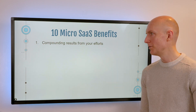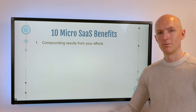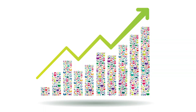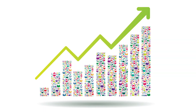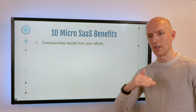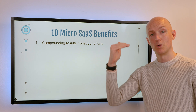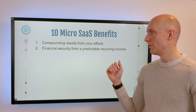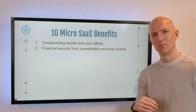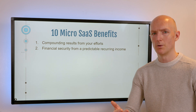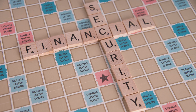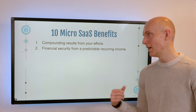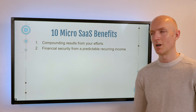Now let's get into some of the benefits. You don't start at zero every month — you start with the number of subscribers you had last month. There'll be a little bit of churn, but basically your results compound over time. As well as the app getting better with more features, your subscriber base is hopefully increasing as well. There's financial security from this predictable recurring income, because you have a passionate set of fans who are already enthusiastic about your app and will happily keep on subscribing.